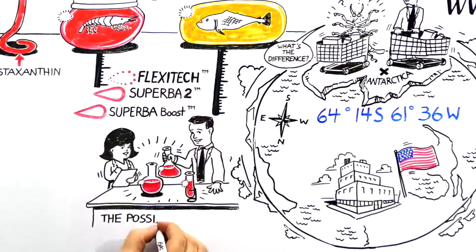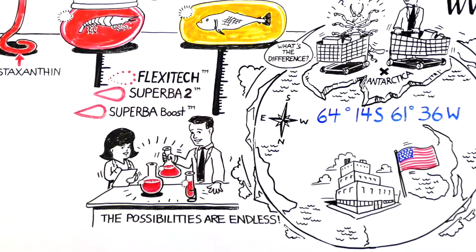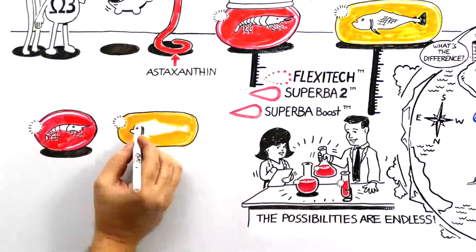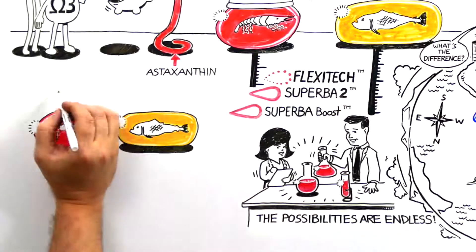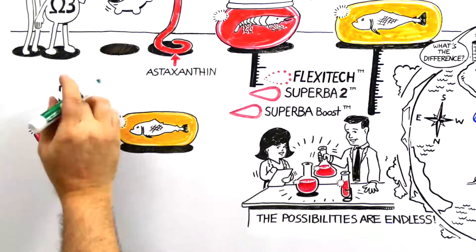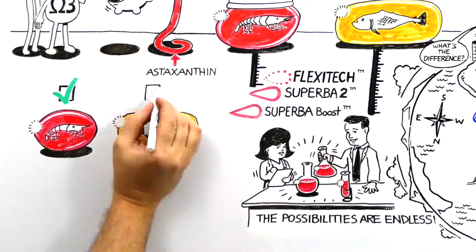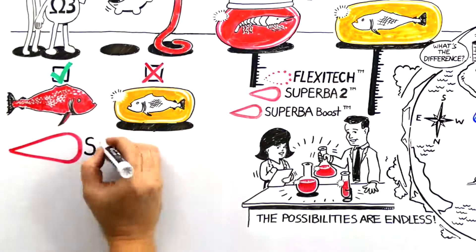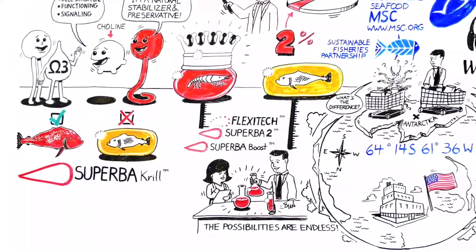So, let's go back to why krill oil is more fish than fish oil. Krill oil and wild Atlantic salmon deliver omega-3s in a mixture of triglycerides and phospholipids. Fish oil doesn't. It's as simple as that. Don't you want to get your omega-3s the way nature intended?